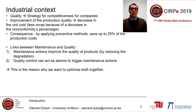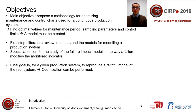The main objective of this paper is to propose a methodology to optimize maintenance and control charts for a continuous production system, finding the optimal values for the maintenance period, sampling parameters, and control limits. The first step is to perform a maintenance literature review to understand the models for modeling production systems, with special attention devoted to failure impact models — that is, the way a failure modifies the monitored indicator. The final goal is to reproduce a faithful model for the real system and optimize it.